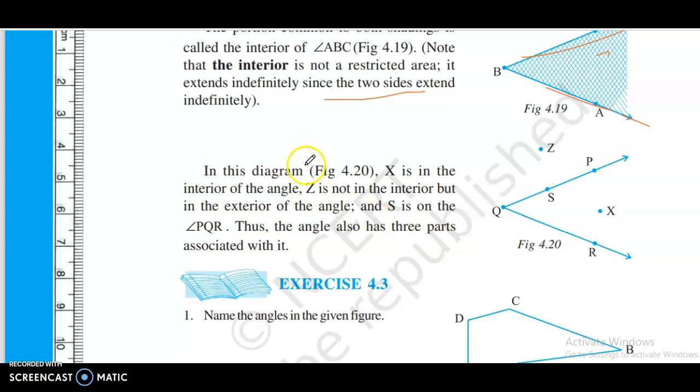In this diagram, figure 4.20, X is in the interior of the angle. Z is not in the interior but in the exterior of the angle. Thus, the angle also has three parts: the interior, the angle itself, and the exterior.